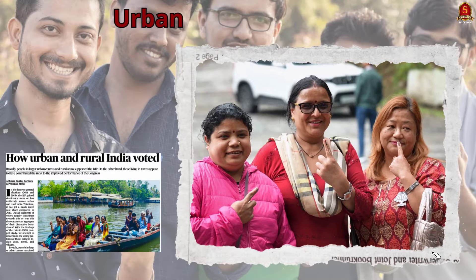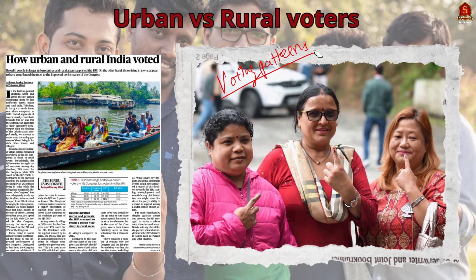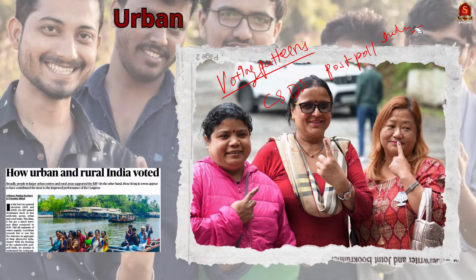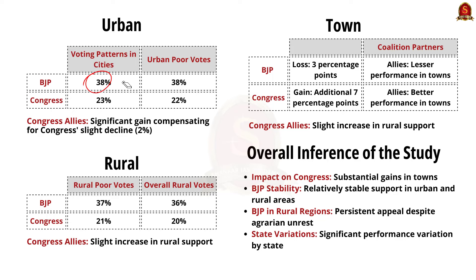The next article highlights varied voting patterns in India's 2024 elections across different regions, based on the Lokniti-CSDS post-poll study. Regarding cities: in larger urban centers, the BJP maintained strong support with 38% of city dwellers voting for them, while Congress received 23%. Despite a slight decline of 2% in Congress support, their allies gained significantly. Among the urban poor, the BJP and Congress received 38% and 22% of votes respectively. In rural areas, the BJP retained significant support with 37% of the rural poor compared to 21% for Congress. Overall in villages, 36% voted for BJP while 20% voted for Congress.